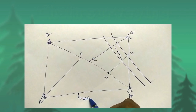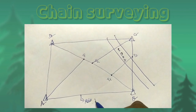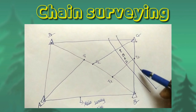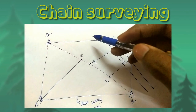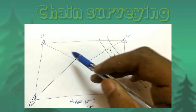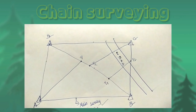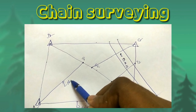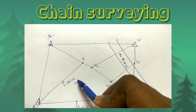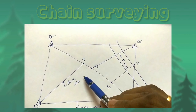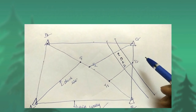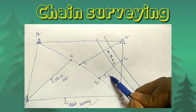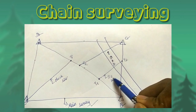Overall, in this plan of chain surveying, the lines joining A-B, B-C, C-D, A-D, and B-D are main survey lines. The lines joining S1-A and S2-C are check lines, which connect the subsidiary stations. T1 and T2 are tie stations, and the connecting lines are known as tie lines.